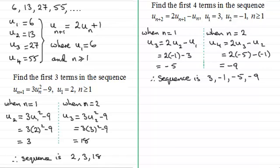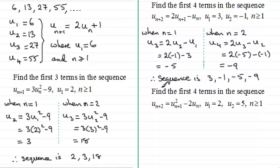Okay, well I've got one here for you to try. Here it is. Find the first four terms in this sequence. Un+2 equals Un+1 squared minus 2Un. Where U1 is 2, U2 is 5, and it's defined for n is greater than or equal to 1. So I'll just give you a moment to try that one. Just pause the video, when you come back, we'll run through it.